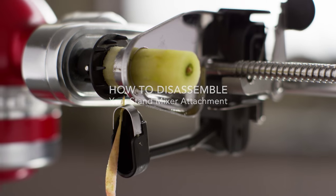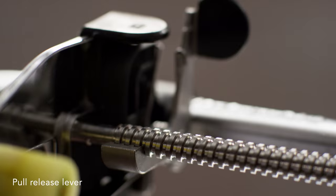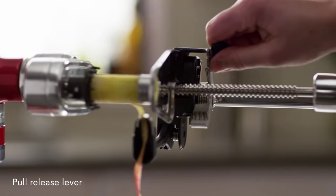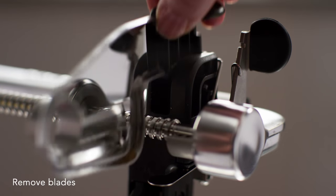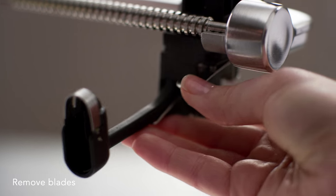Disassembling your KitchenAid spiralizer with peel, core, and slice attachment. Pull the release lever and push the carrier away from the stand mixer to the end of the rail. Remove all blades used, including both the cutting and peeling blade.